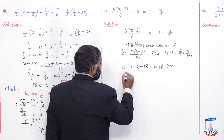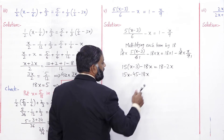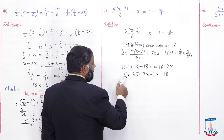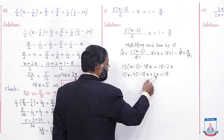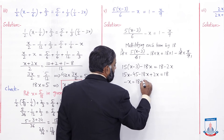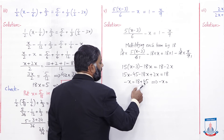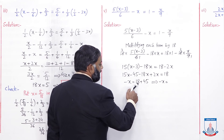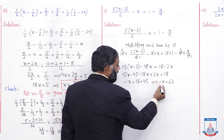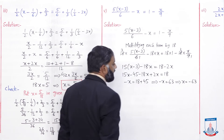Ab isko multiply kar dein: 15x minus 45 minus 18x. Minus 2x ko left side pe lein to plus 2x ho jayega, is equal to 18. Ab 15 minus 18 plus 2 equals minus x, aur yeh minus 45 right side pe jaakar plus 45 ho jayega. To minus x is equal to 45 plus 18 equals 63. Humein x ki value chahiye: yeh negative hai, positive karne ke liye both sides pe negative se multiply kar dein. x positive ho jayega aur 63 negative ho jayega. Yeh x ki value aayi: minus 63.